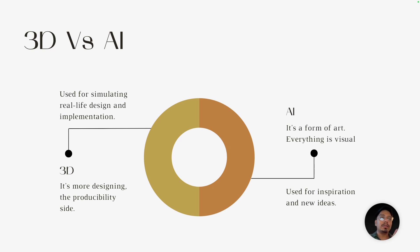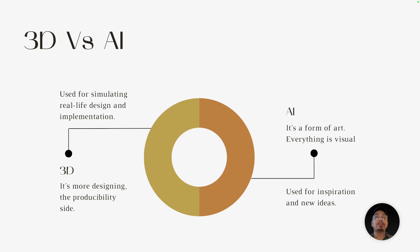The inspiration and new idea part comes from AI, but once your design ideas are ready and you want to move into the producibility side, that's where 3D comes in. You cannot take ideas from AI-generated images directly to production — you need to understand how those patterns are going to be produced. So AI is more towards the inspiration and idea side, and 3D is more towards the producibility side. They are not the same thing.